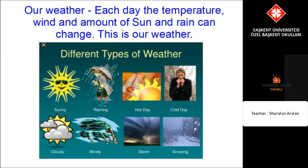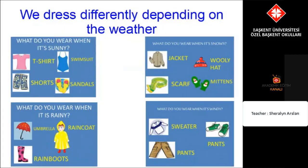There are many different types of weather. Some days it can be sunny, some days it can be raining, other days may be cloudy and other days may be windy. Some days are hot, some days are cold, some days we have storms and other days it can snow.